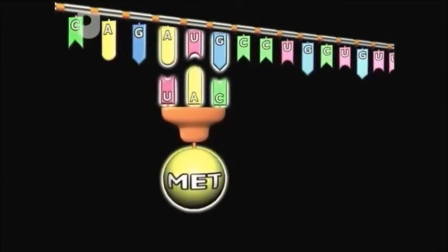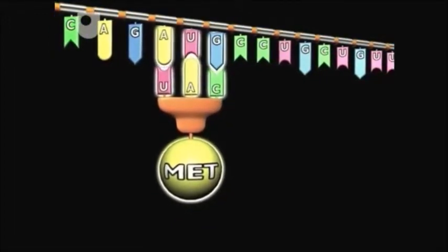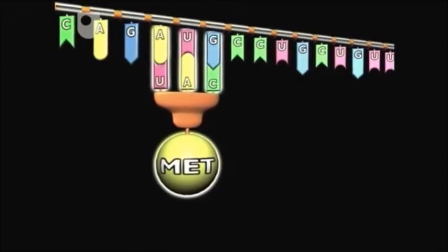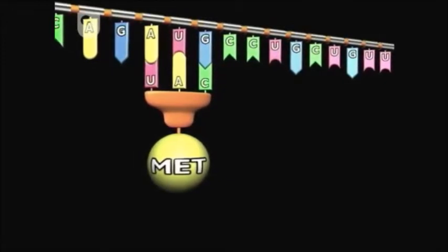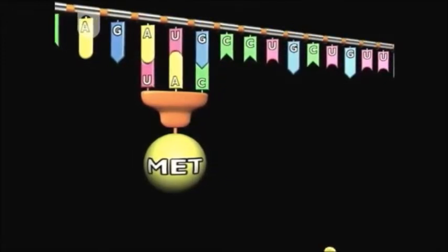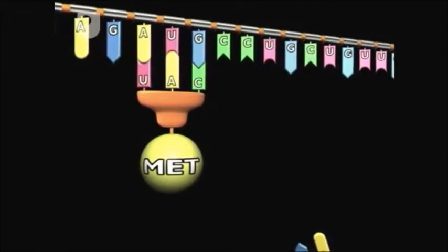The other end of the transfer RNA is capable of binding to the unique amino acid corresponding to that anticodon. Since there are 20 amino acids, there must be at least 20 different transfer RNA adapters.